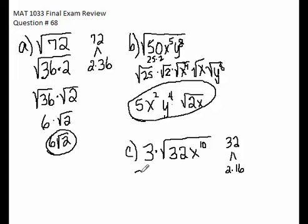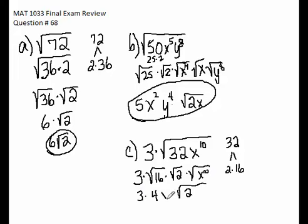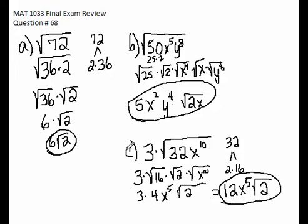Using the product rule, it's 3 times the square root of 16 times the square root of 2, and x to the tenth is a perfect square. We've got 3 times 4 square root of 2. The square root of x to the tenth is x to the fifth. Ultimately we have 12 x to the fifth square root of 2 for the simplest form for part C.